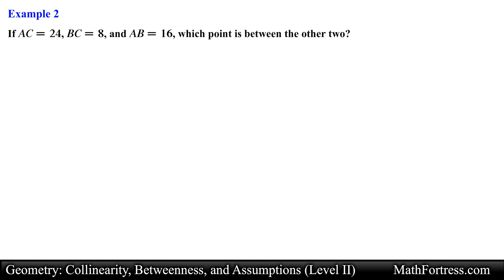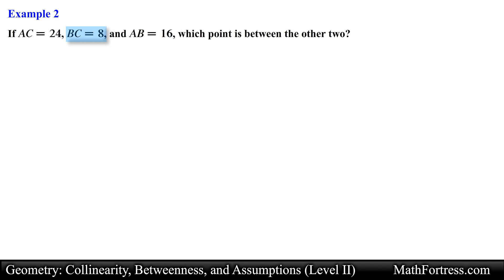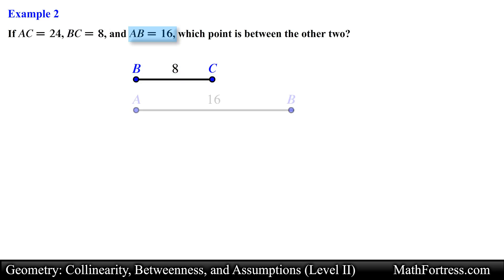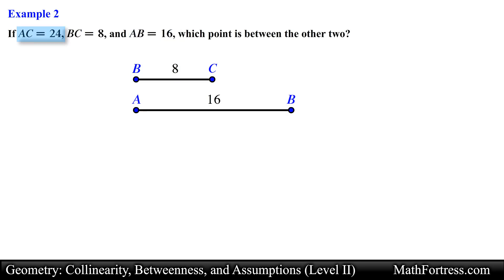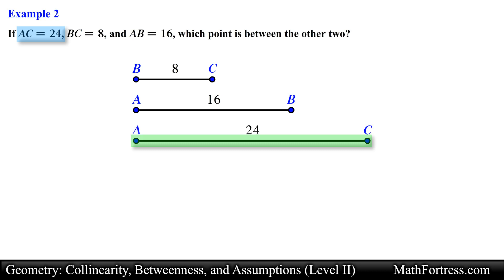We can start solving this problem by figuring out the relative positions of all three points. We can determine this by comparing the relative lengths of each line segment. The shortest length is 8, which corresponds to segment BC. The medium length is 16, which corresponds to segment AB. And the longest length is 24, which corresponds to segment AC.